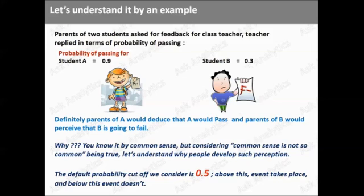So, even by common sense, you can say that student A is going to pass and student B will fail. But, why did we think about it? As I have written, because somewhere back of your mind, you are thinking the cutoff probability as 0.5. So, whenever we say anything has got probability of more than 0.5, it would happen and whenever it is less, it won't. And suppose the probability is 0.5, it is a 50-50 situation.